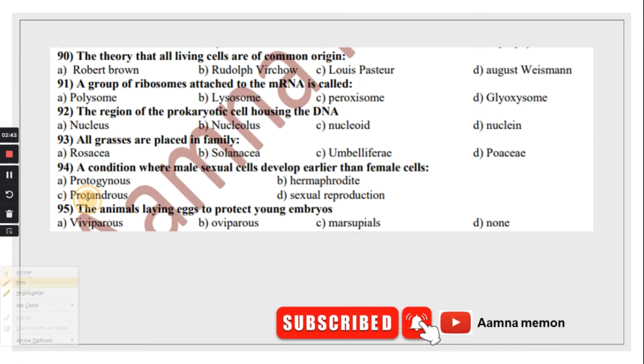The theory that all living cells are of common origin was brought by Rudolf Virchow. A group of ribosomes attached to the mRNA is called polysome. The region of the prokaryotic cell housing the DNA is nucleoid. All grasses are placed in the family Poaceae. A condition where male sexual cells develop earlier than female cells is protandrous. Animals laying eggs to protect young embryos are known as oviparous.